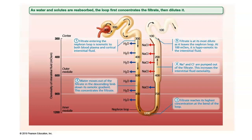In the descending limb, water is being passively reabsorbed into the blood. As that happens, the concentration of the filtrate is becoming greater and greater. That makes sense because water is leaving and salt is not leaving, which means that the water left behind in the filtrate is becoming more and more salty, more concentrated. So by the time you reach the bottom of the loop of Henle, that filtrate is the most concentrated.